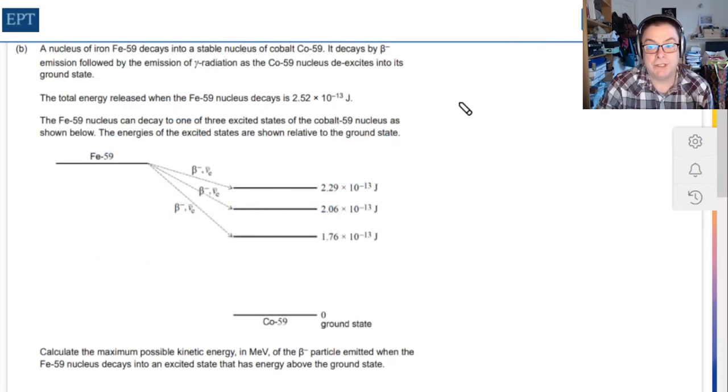In part B, we're asked to consider the energy change of an Iron-59 nucleus as it decays into Cobalt-59. The decay takes place by the emission of a beta particle followed by the emission of a gamma ray. There is an in-between state when the Cobalt-59 nucleus is excited, as represented here.